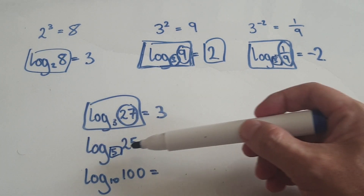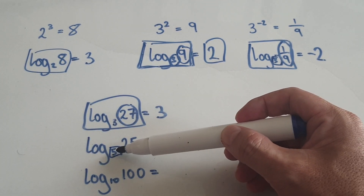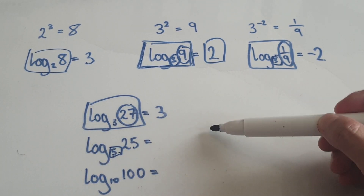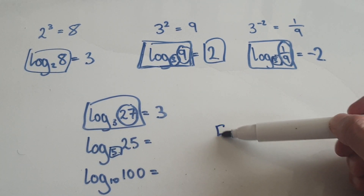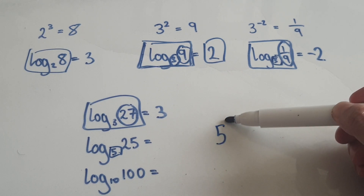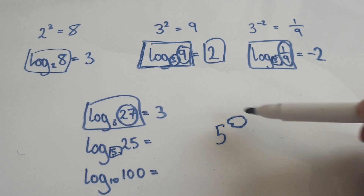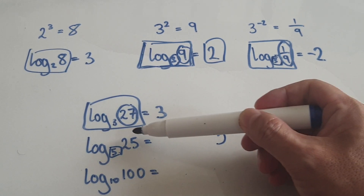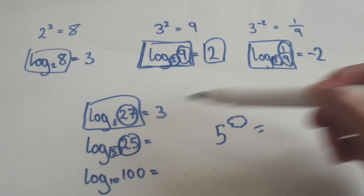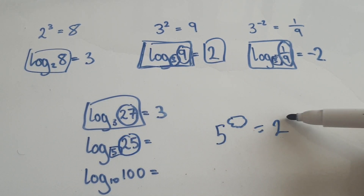Translate the whole thing, zoom into the base. So that would be 5 to the power of what would give me this thing here.